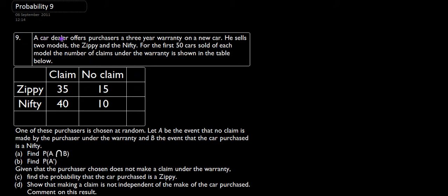In this ninth question, we have a car dealer who offers to purchase a three-year warranty on a new car. He sells two models, a Zippy and a Nifty. So for the first 50 cars sold, here are the number of claims under the warranty.